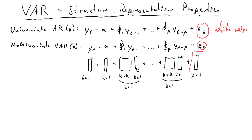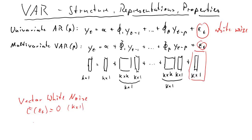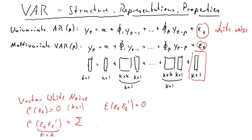In the univariate case we determined that the residuals were white noise. Now in a VAR case we have vector white noise because epsilon t is now a k-by-1 vector. The conditions are: the expected value of that vector equals 0 (k-by-1); the expected value of epsilon t times epsilon t prime — a k-by-k matrix — should equal sigma; and the expected value of epsilon t times epsilon s prime equals 0, meaning they should not be correlated at different time periods.